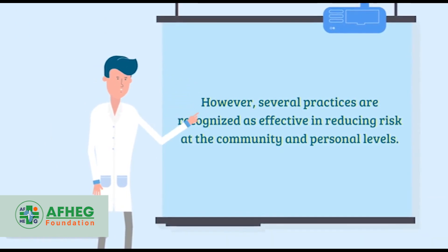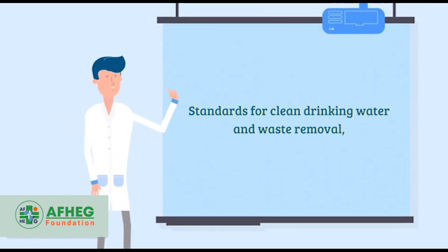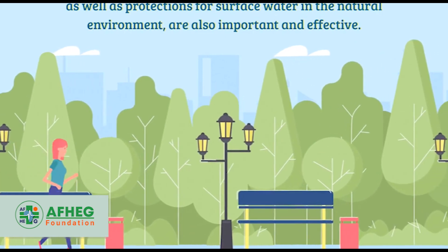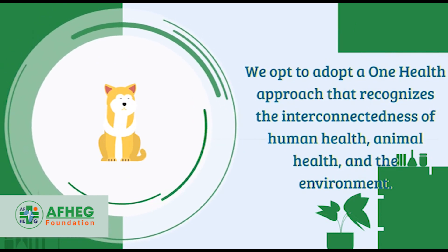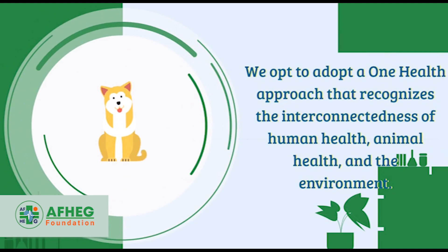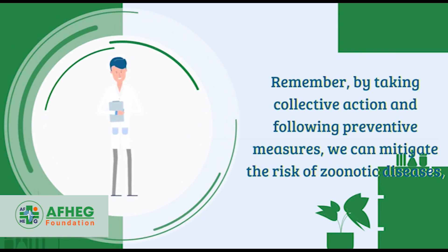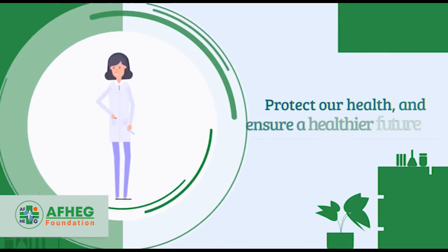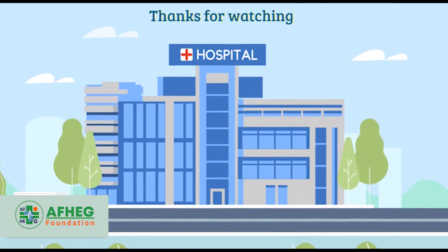Prevention methods for zoonotic diseases differ for each pathogen. However, several practices are recognized as effective in reducing risk at the community and personal levels. Standards for clean drinking water, waste removal, and protections for surface water are also important. We should adopt a One Health approach that recognizes the interconnectedness of human health, animal health, and the environment. By taking collective action and following preventive measures, we can mitigate the risk of zoonotic diseases, protect our health, and ensure a healthier future for both humans and animals.